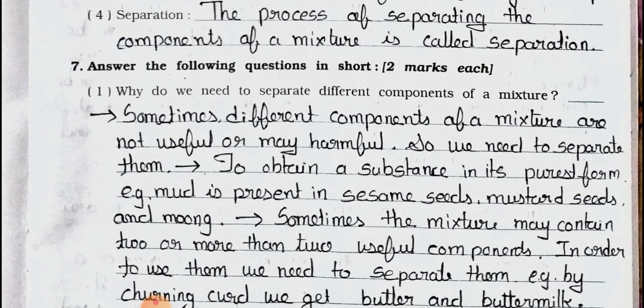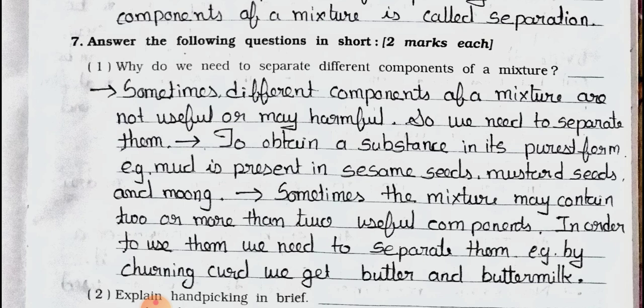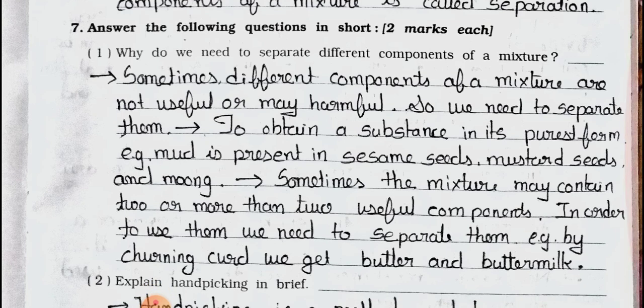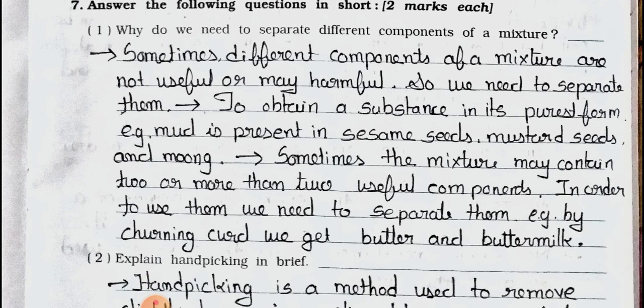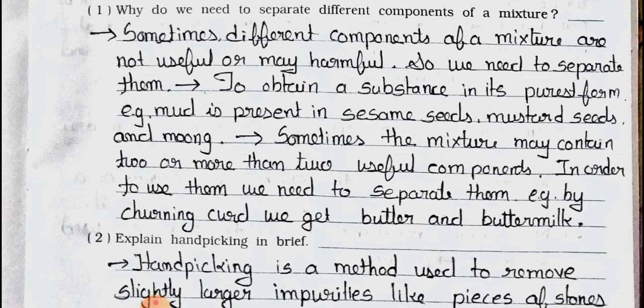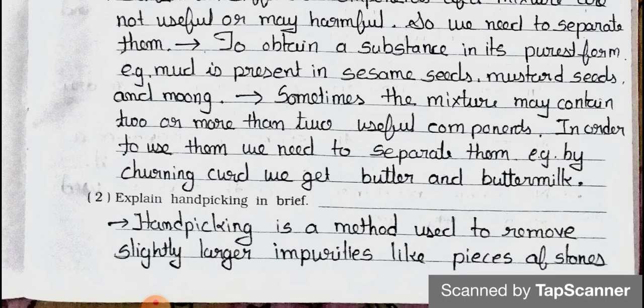Answer the following questions in short — two marks each. Question 1: Why do we need to separate different components of a mixture? Answer: Sometimes different components of a mixture are not useful or may be harmful, so we need to separate them to obtain a substance in its purest form. For example, mud is present in sesame seed, mustard seed, and moong. Sometimes the mixture may contain two or more useful components; in order to use them we need to separate them. For example, by churning curd we get butter and buttermilk.